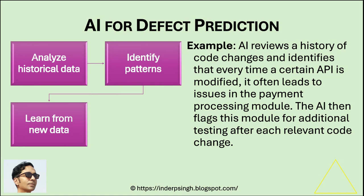AI for defect prediction: artificial intelligence in software testing can predict where defects are most likely to occur. AI models trained on historical defect data provide insights into which parts of the application are prone to failure, and this data can be used to automate QA testing.